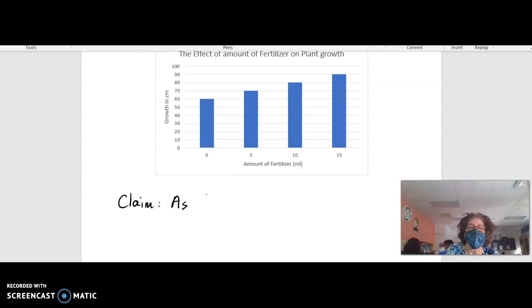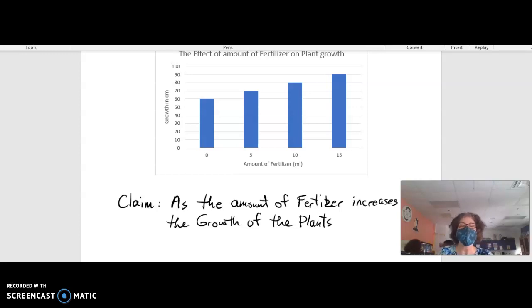So the easiest way to start is just like this. You say, as the amount of fertilizer, which is our IV, increases, the growth of the plants... Help me fill in a blank. What's happening to the growth of the plants? Raise your hand if you say it's decreasing. Raise your hand if you think it's increasing. Good.